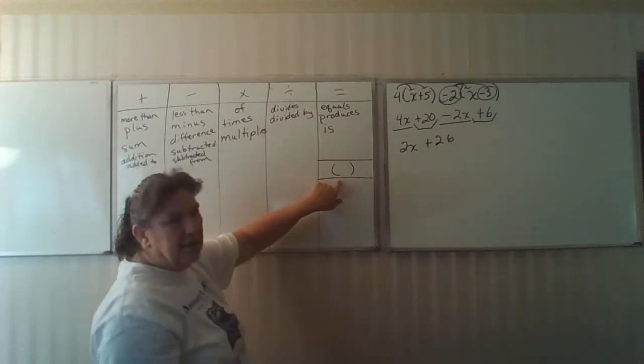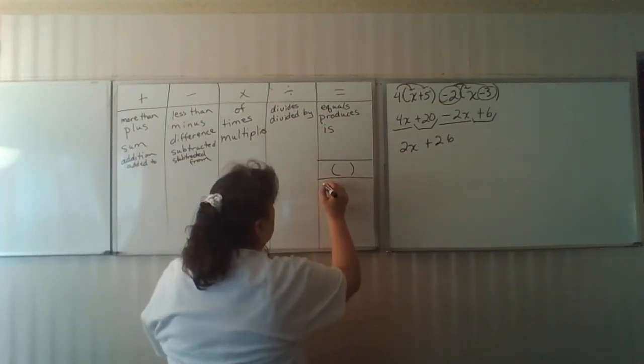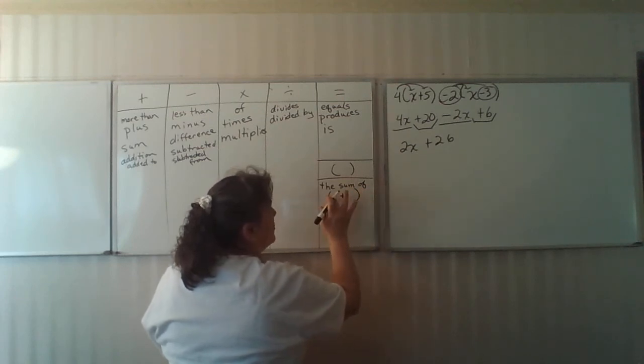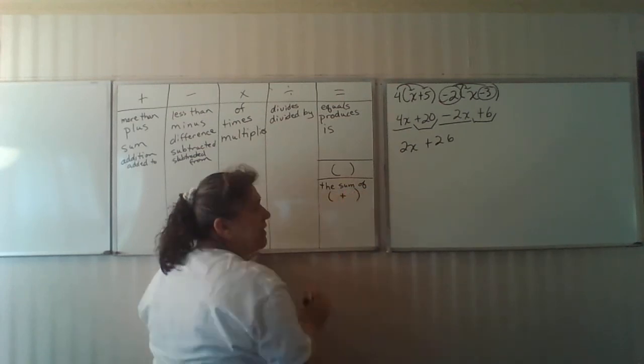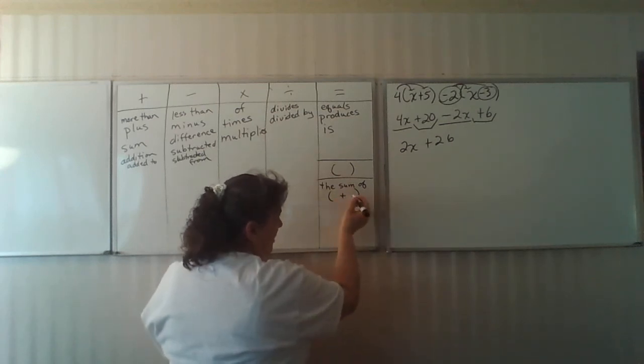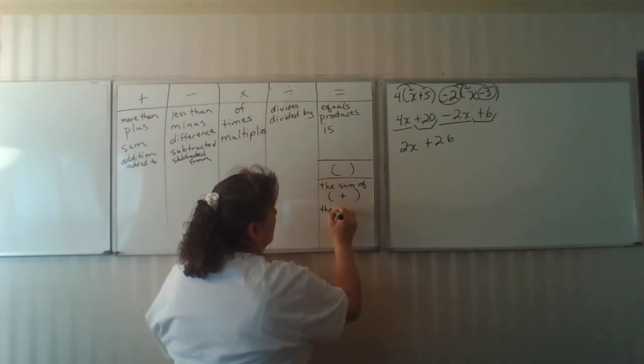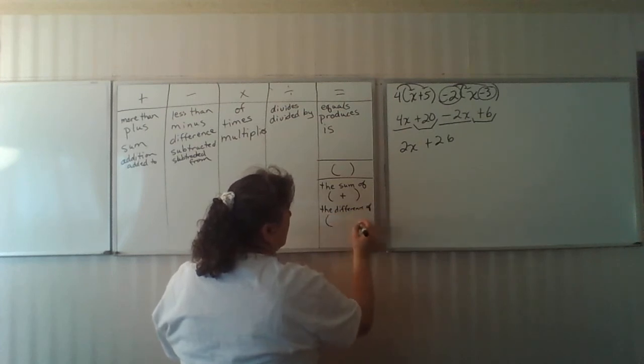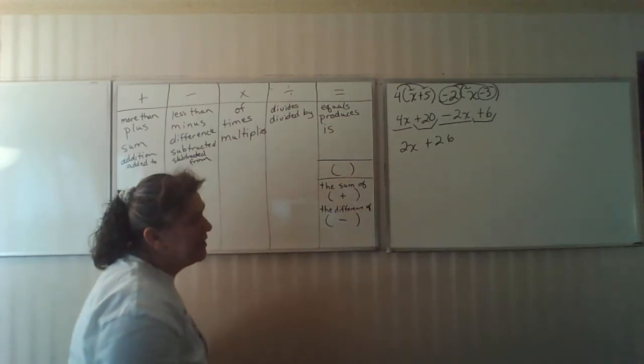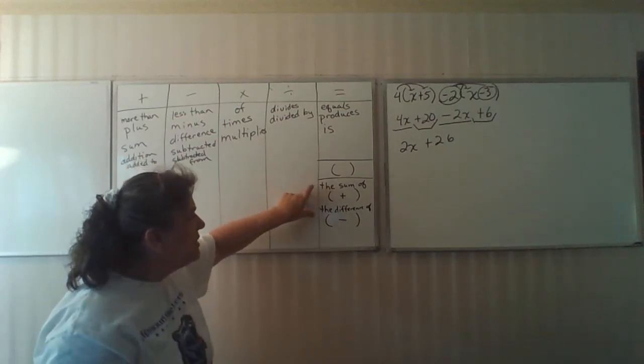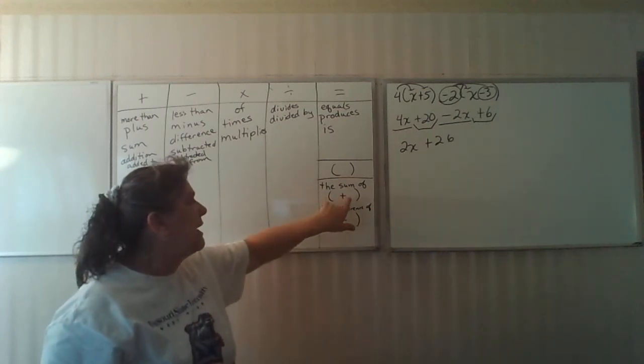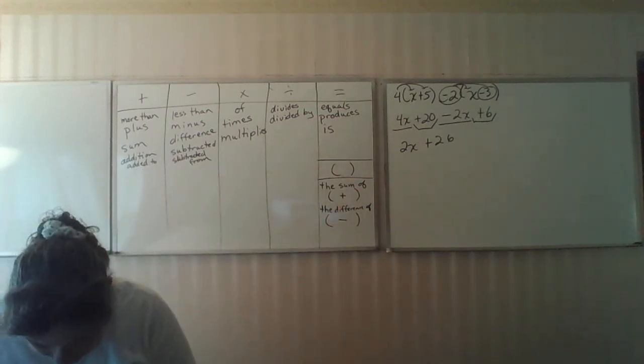Parenthesis: you will see the expressions the sum of, and this indicates a parenthesis with the two numbers given on either side with addition. The difference of, same thing with a subtraction sign in the middle. That series indicates something is being put inside parenthesis.